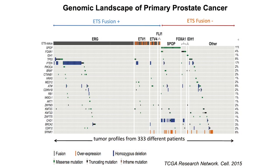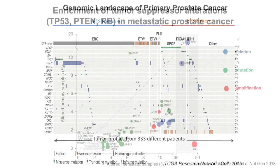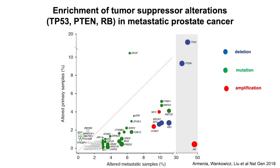This is the map of the oncoprint of primary prostate cancer. The key takeaway is that roughly half of prostate cancers in US or European men are caused by a translocation involving ERG or cousins — that's family member cousins — and they are mutually exclusive with pretty much everything else except PTEN. That's relevant for the last vignette I'm going to tell you.